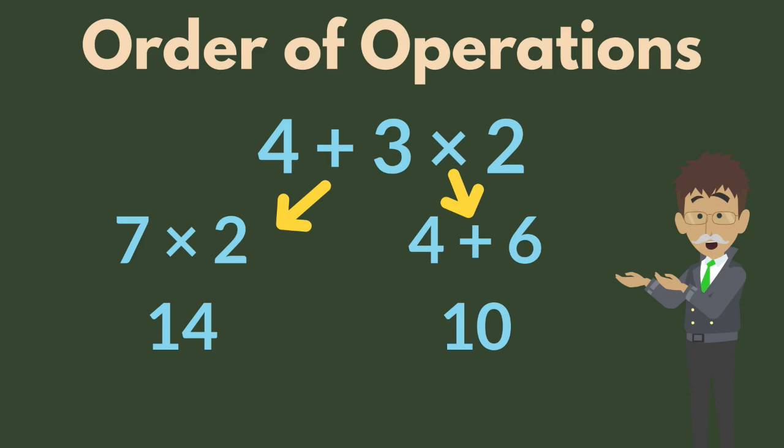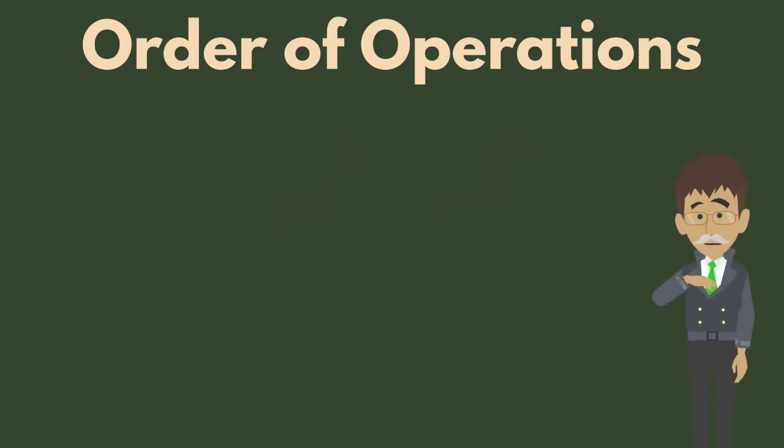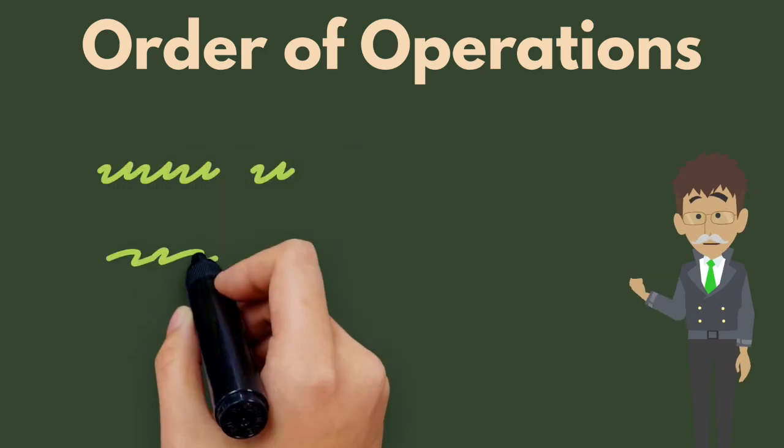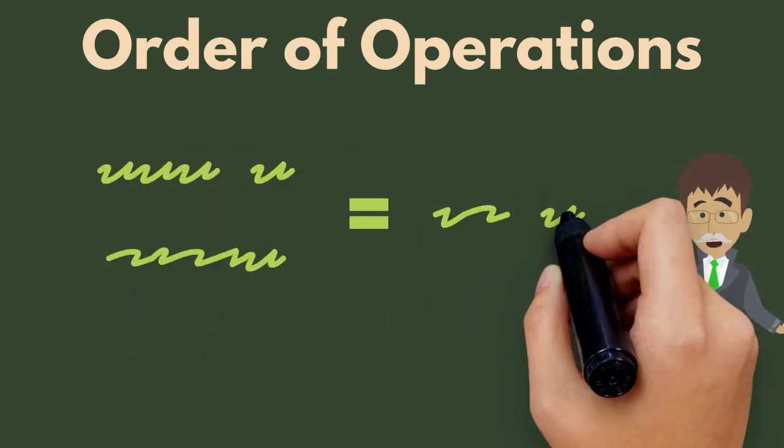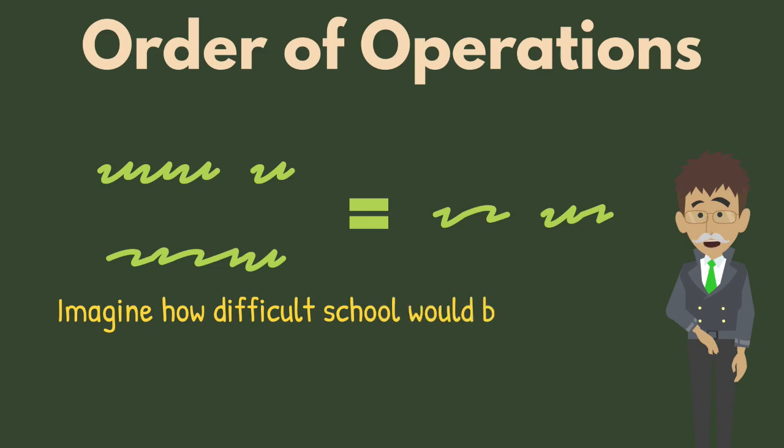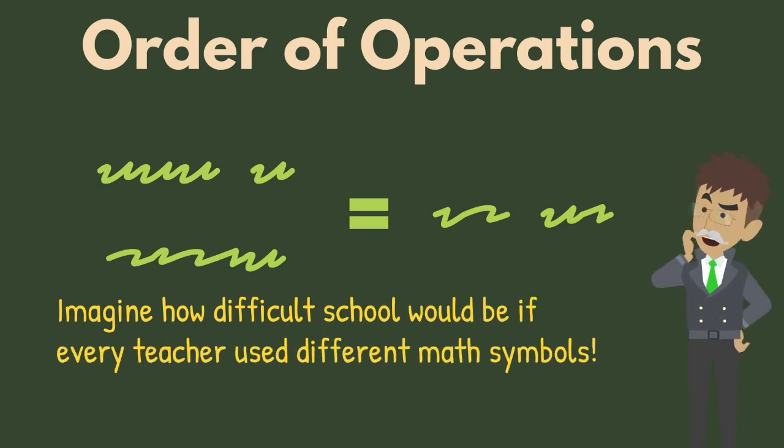The order of operations was first developed in the 16th and 17th centuries when mathematicians tried to create rules to make written mathematics easier to understand. Before this, each person had their own way of writing mathematics, often learned by where they went to school or who taught them. This led to a lot of confusion and mistakes.